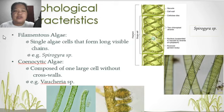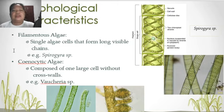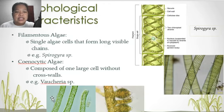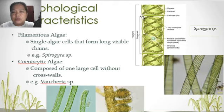We also have the filamentous type and the siphonous algae. For the filamentous type, we have spirogyra. For the siphonous algae, we have the Botrychium species, composed of one large cell without cross walls. While the filamentous type is septated with cross walls, the siphonous type is a continuous one.